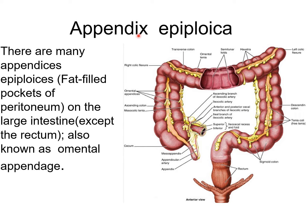About omental appendages, also called appendices epiploicae — there are many of them. They are fat-filled pockets of peritoneum seen on the surface of the large intestine, except the rectum. Here you can see the yellow-colored fat-filled pouches throughout the length of the large intestine.